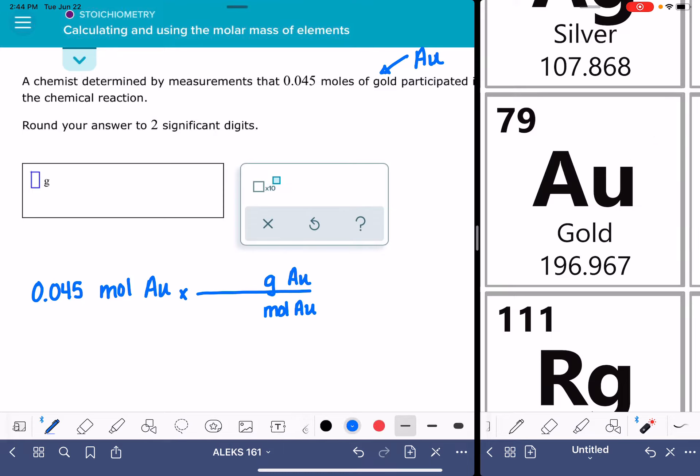Specifically, what this means is that there are 196.967 grams of silver, or excuse me, gold, for every one mole.